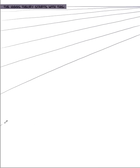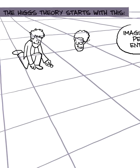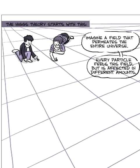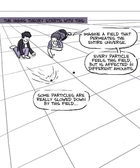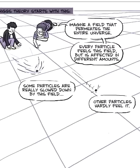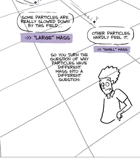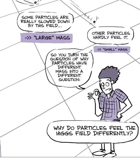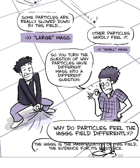The Higgs theory starts with this. Imagine a field that permeates the entire universe. And every particle feels this field, is affected by this field, in different amounts. So some particles are really slowed down by interaction in this field, like swimming through molasses. And other particles hardly feel it. So the ones that hardly feel it, they have a small mass. The ones that are really affected by it, they couple strongly to this field, are slowed down a lot. They have a large mass. So you've turned the question of why do particles have different masses into a different question. Why do particles feel the Higgs field differently? But there is one manifestation of the field, is the existence of this particle.